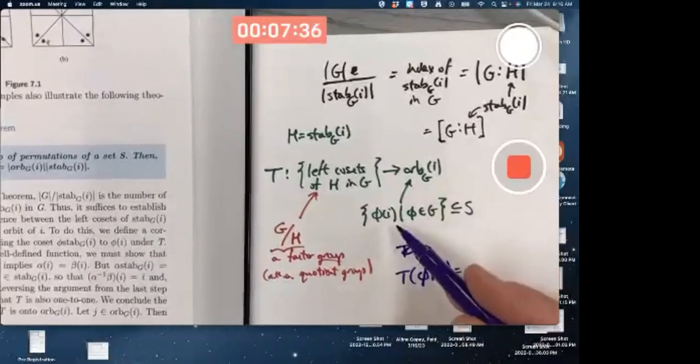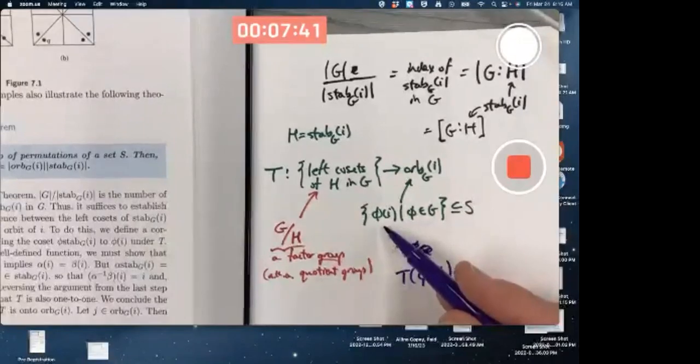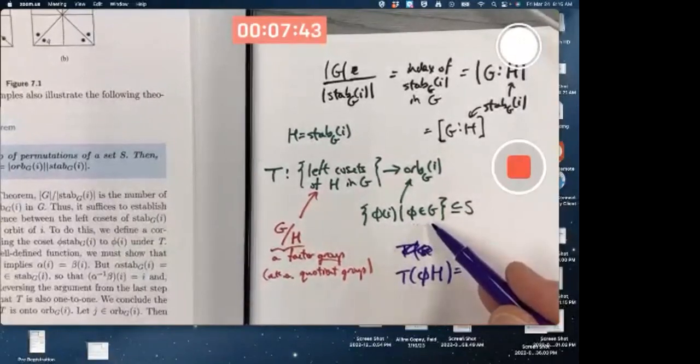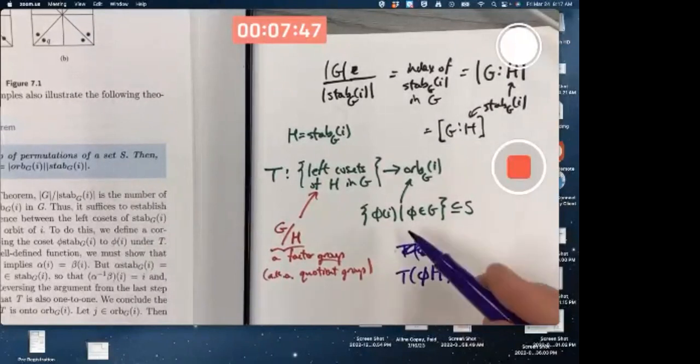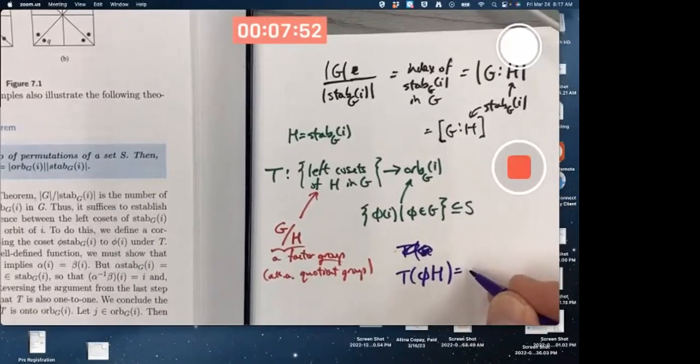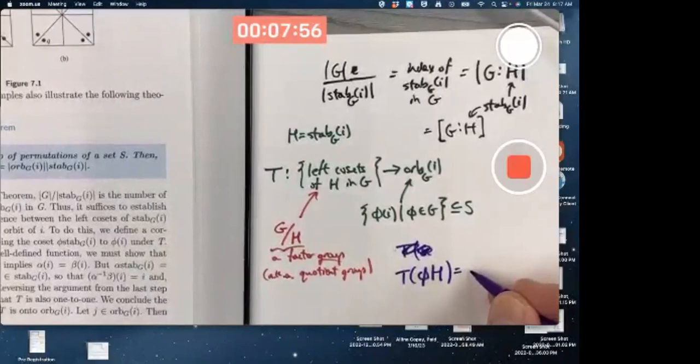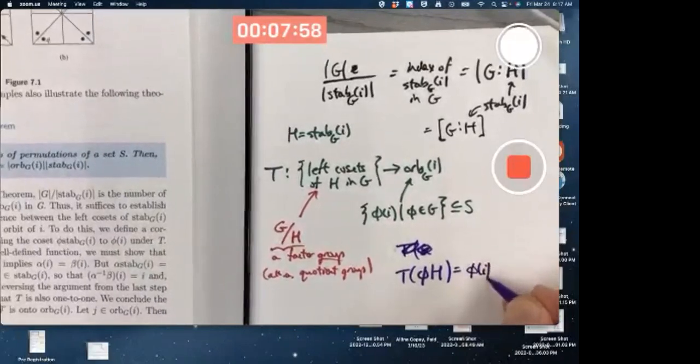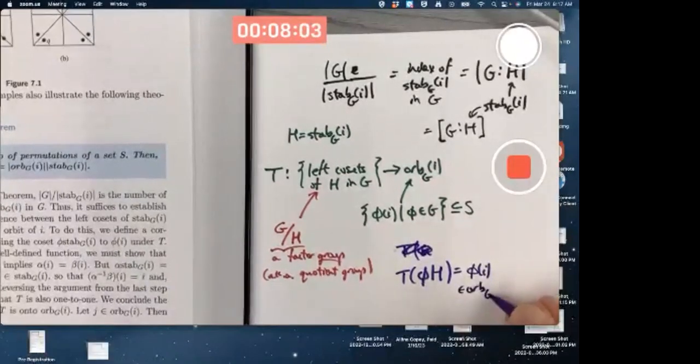What's the only thing that makes sense to even try? Well, what is the orbit? Again, the orbit is the set of outputs of phi of I as phi ranges over G. For the fixed element I in S, what are the different outputs that you can get? The only thing that makes sense here is that we map it to phi of I. This will be an element of the orbit. All right, we've got an I, we've got a phi. That's the only thing that makes sense to try, even.